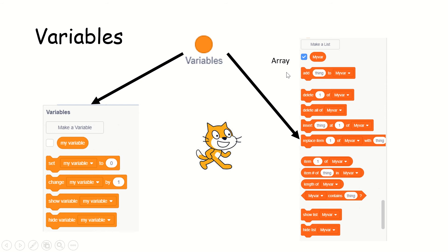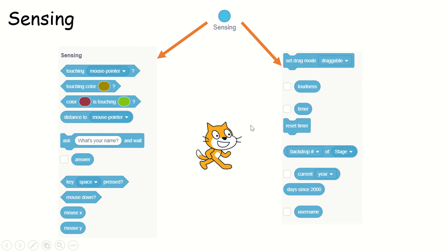Array is nothing but a series of things — a series of values stacked one after another, and you can access all of them. We will see this later — don't worry about it right now. Just understand that we have something called a variable and it is going to be very useful.